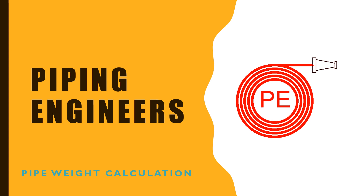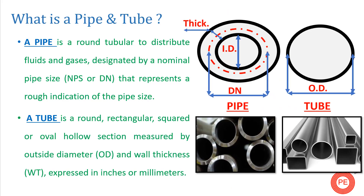So let's begin today's video and learn about pipe weight calculation. A pipe is basically a round tubular that is used to distribute fluids and gases. Pipe is a basic entity used in each and every industry. Basically, if we want to transport fluids or liquids from one place to another, we transport it with the help of a pipe.